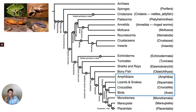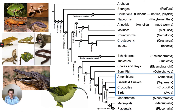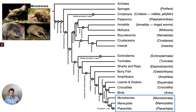The first couple of pairings: we've got amphibians, which broke off pretty early. Then we've got our reptiles — which are really our diapsids here — which are lizards and snakes, crocodiles, and then birds, which also belong to that broad grouping. And we've got this last lineage here, which is comprised of mammals.